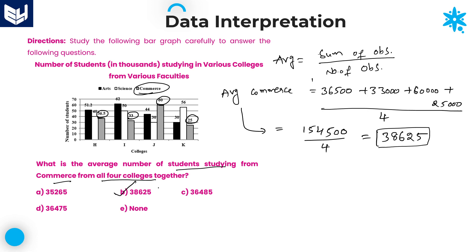38,625 is our required answer. In an examination, if only one option starts with 38, you can stop your calculation at that point and select that answer — that is a small tip for this kind of problem. I hope you understood each and every problem in this session. Thank you for watching.